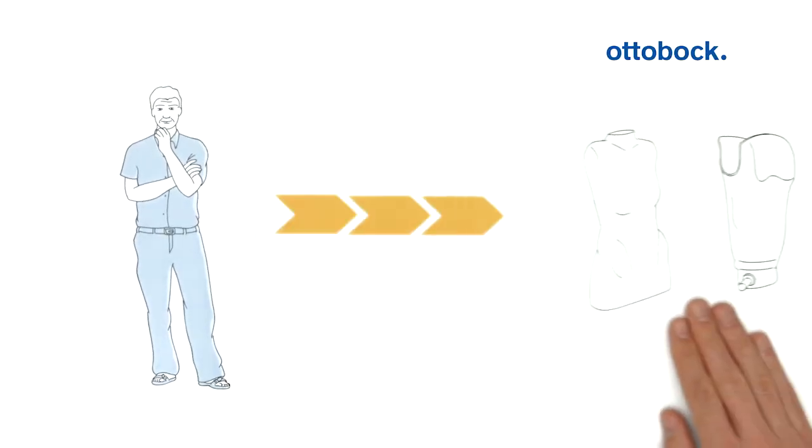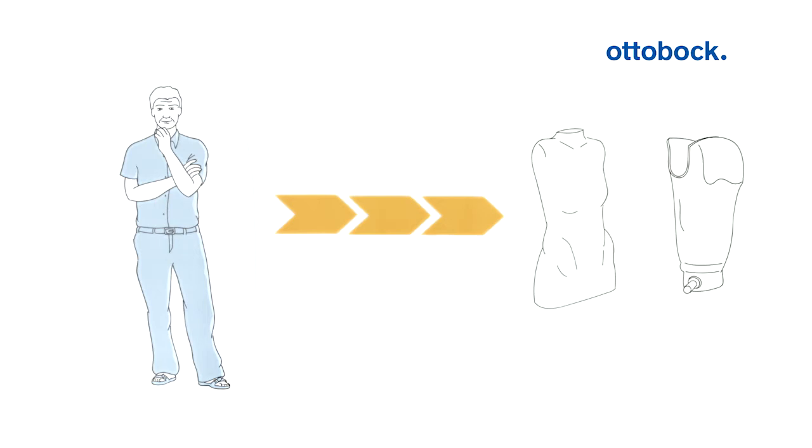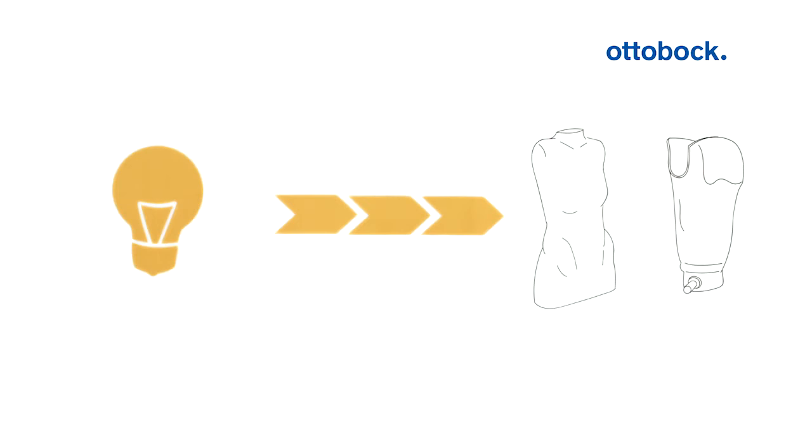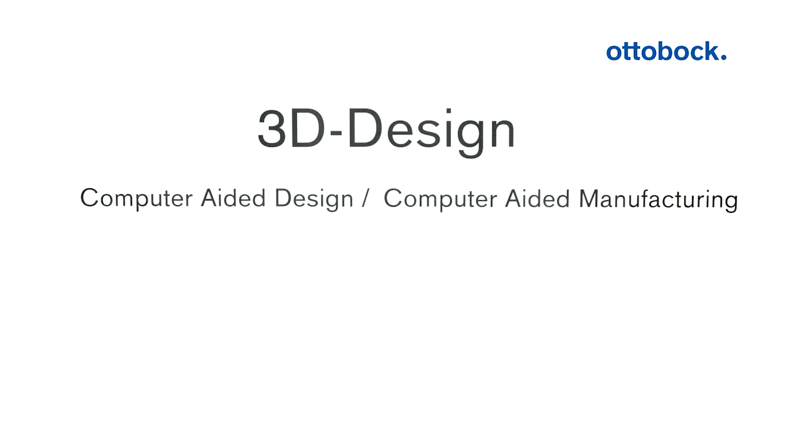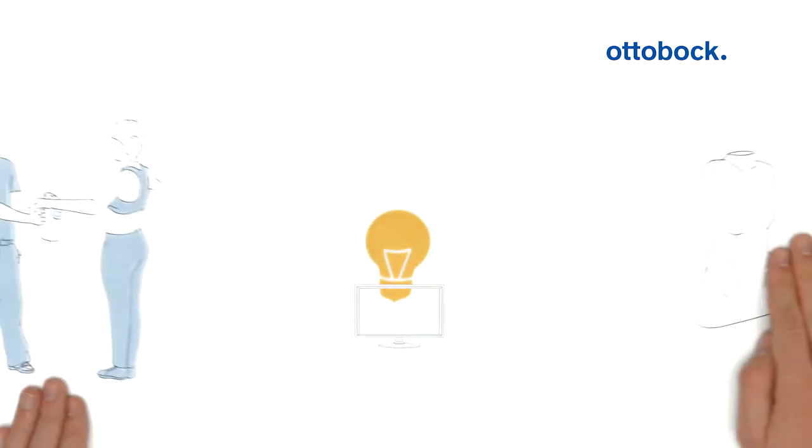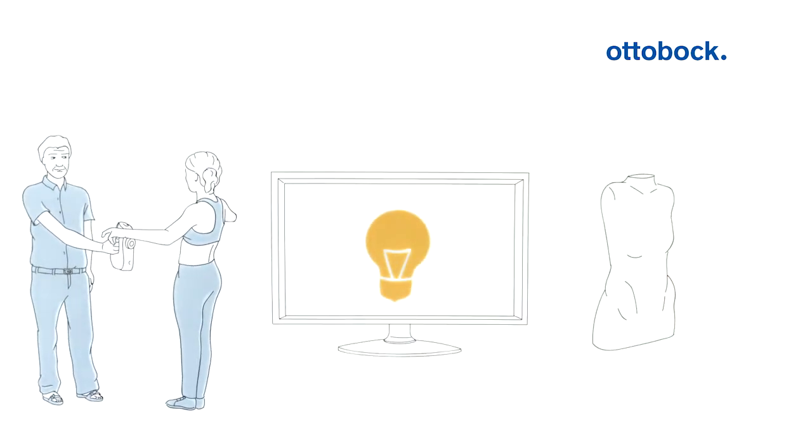Only three steps to the finished test socket or positive model. How does that work? It's simple with 3D Design by Ottobock. 3D Design is a CAD/CAM process for manufacturing positive models and test sockets. Intelligent technologies help you obtain the finished product in only three steps.